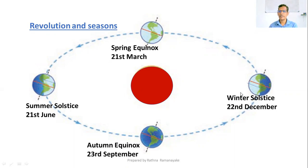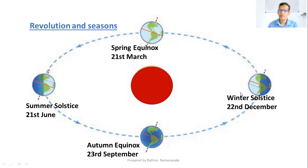The Sun is overhead on different latitudes on different days of the year. On 22nd December, the Sun is overhead over the Tropic of Capricorn, as you can see here.